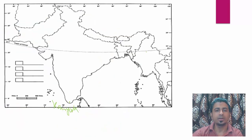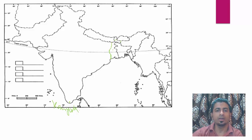Next is West Bengal. West Bengal is a state as you all know, so there is not much problem in marking it. You should know the boundaries though — the West Bengal boundary runs like this. You will mark here — this whole area is West Bengal.